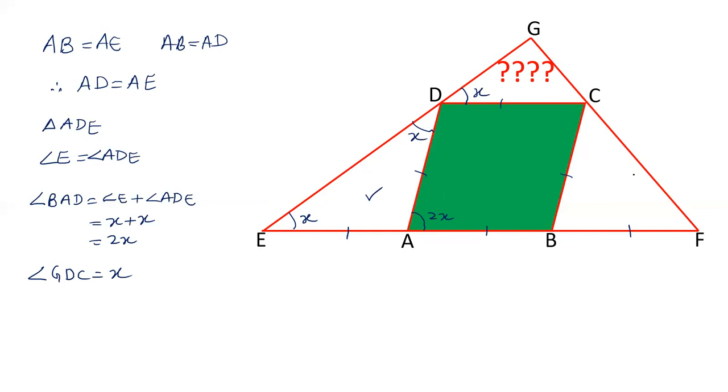Now coming to the second part, that is triangle BCF. In triangle BCF, BC equals BF. If BC and BF are equal, the angles opposite to equal sides are equal. So angle F equals angle BCF, and let's say it equals Y.